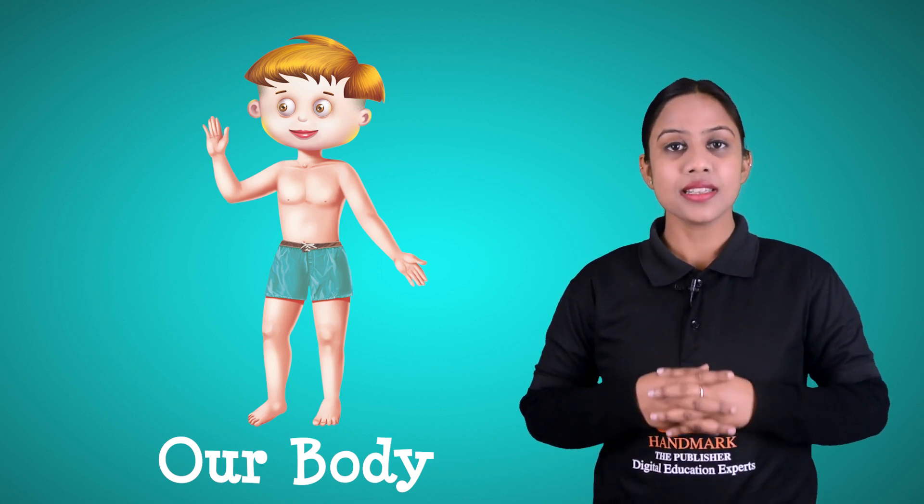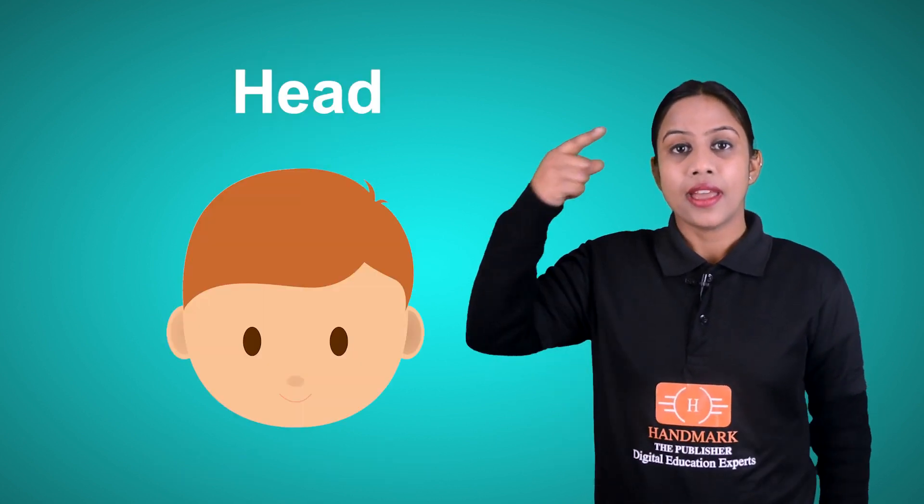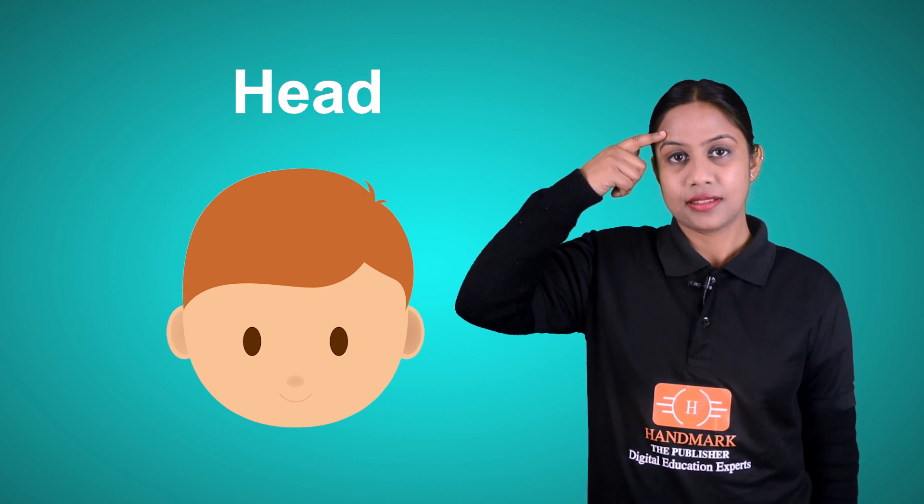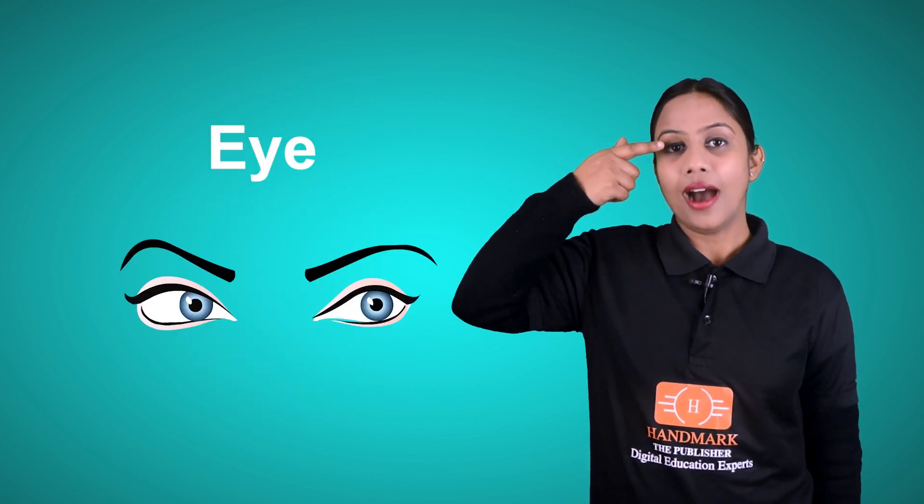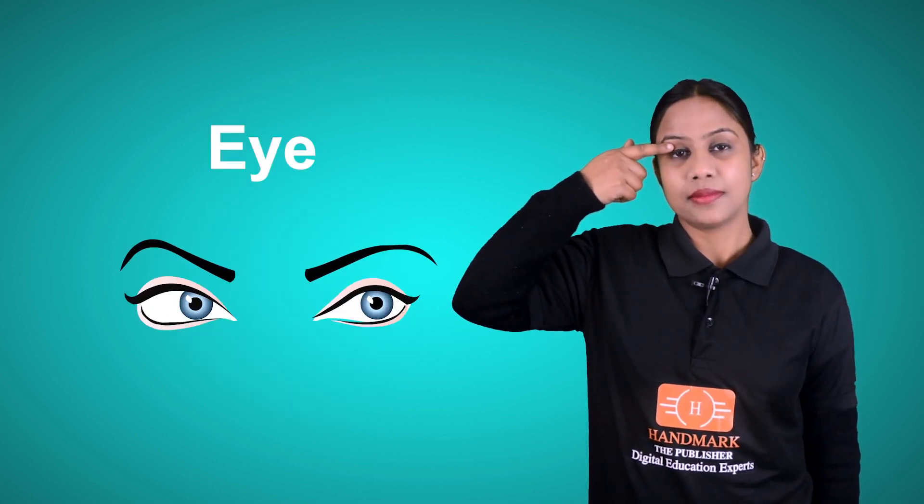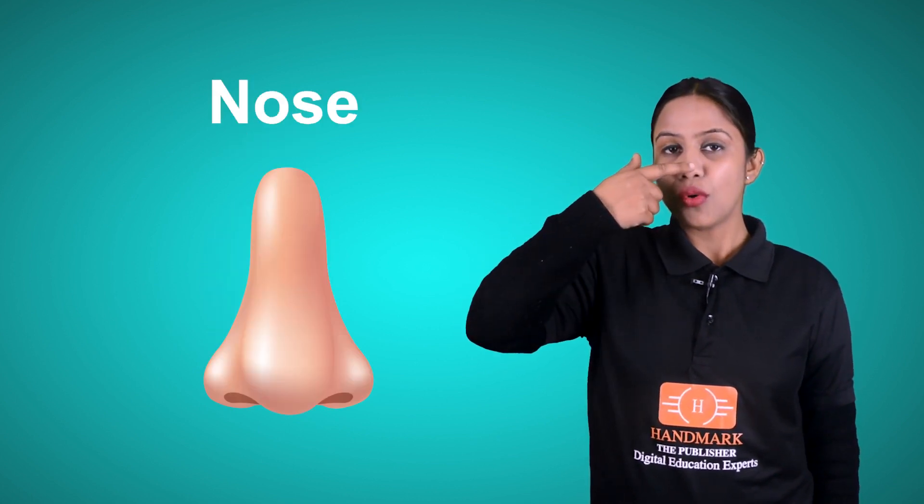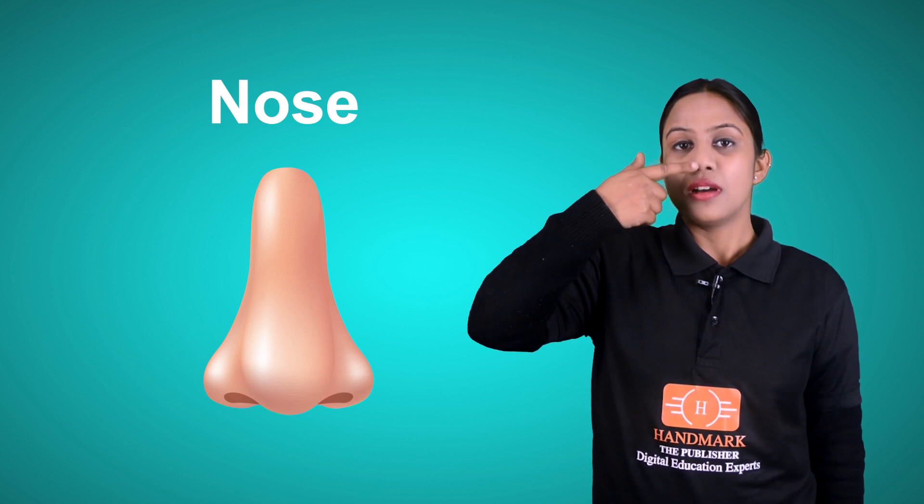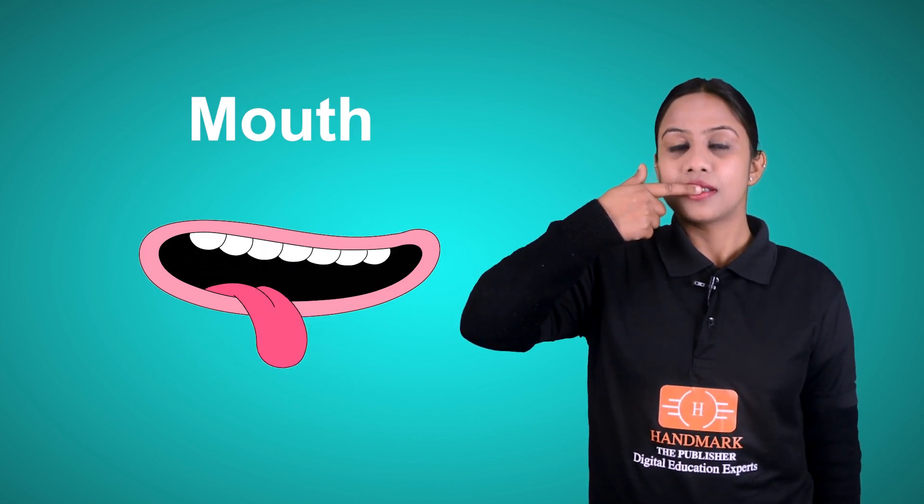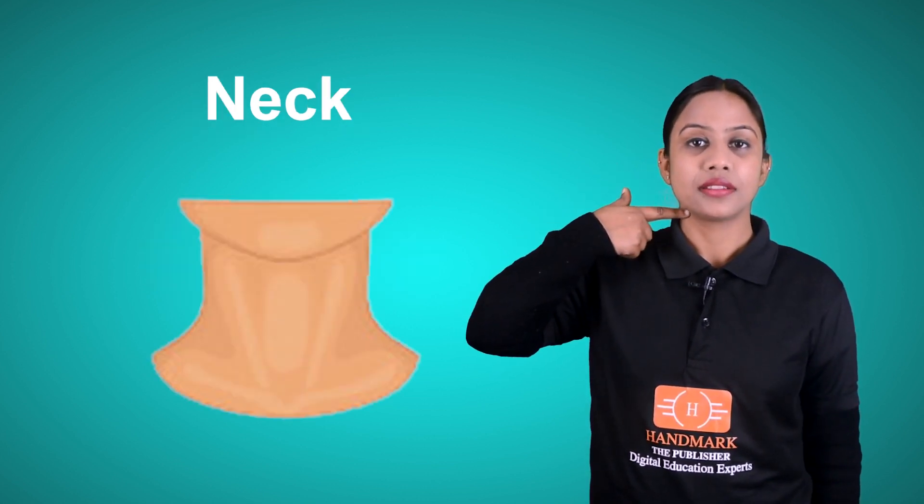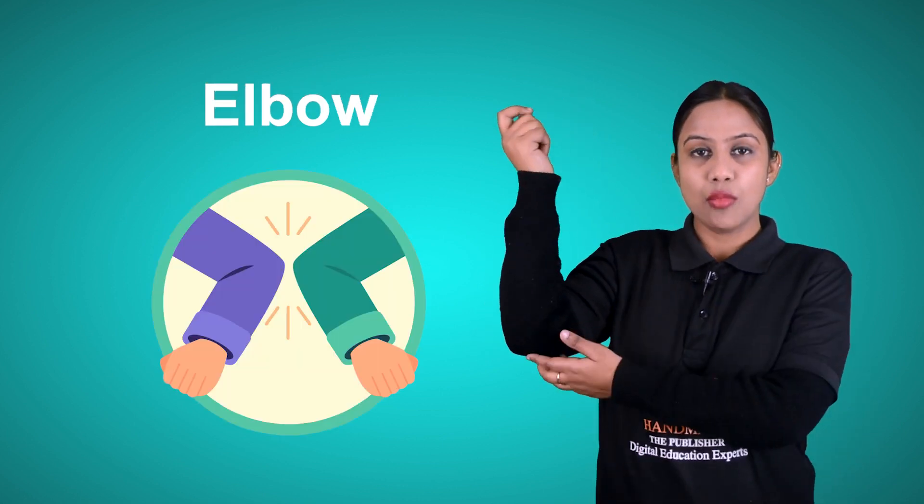Each part has a different name. Let us discuss about it. Head, eyes, ears, nose, mouth, neck, elbows, arms.